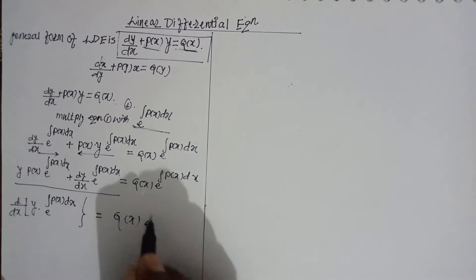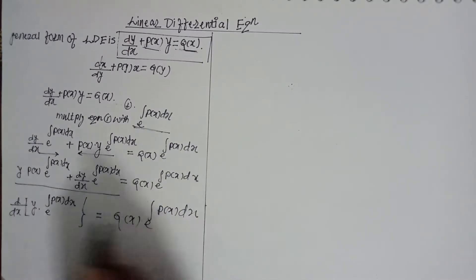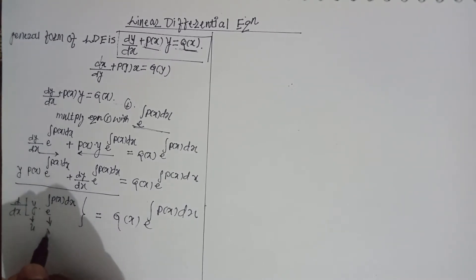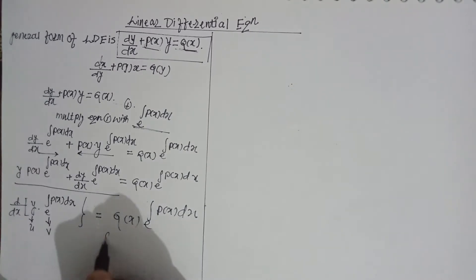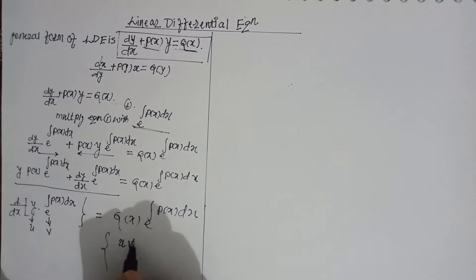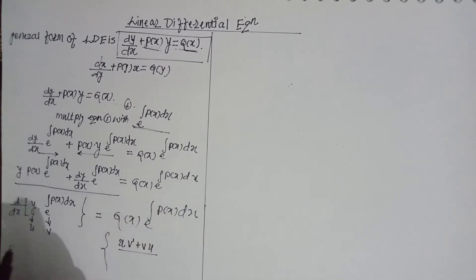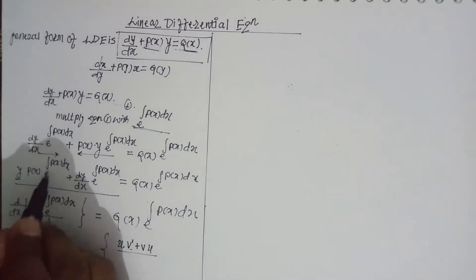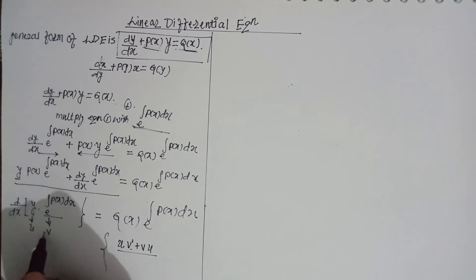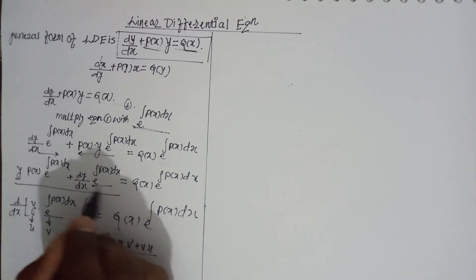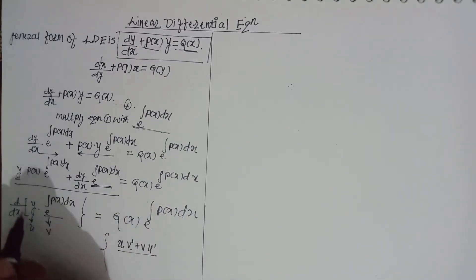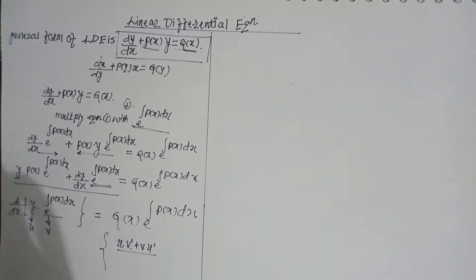This uses the derivative of two functions — the product rule: u·v, derivative equals u as it is times derivative of v, plus v as it is times derivative of u. Here u is y, v is e^∫P(x)dx. So v as it is times derivative of u gives e^∫P(x)dx times dy/dx.